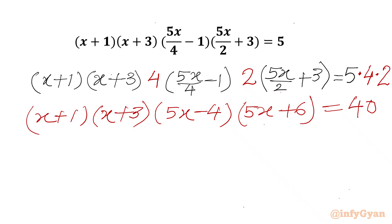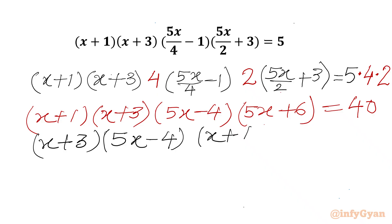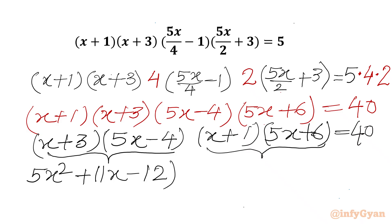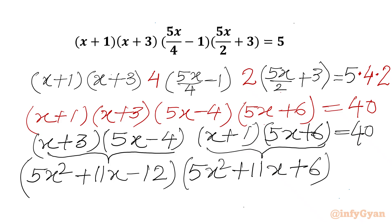Now I will rewrite our equation in this manner. I will consider (x + 3)(5x − 4) and then multiply (x + 1) with the bracket (5x + 6). Expanding (x + 3)(5x − 4): we get 5x² − 4x + 15x − 12, giving 5x² + 11x − 12. Expanding (x + 1)(5x + 6): we get 5x² + 6x + 5x + 6, giving 5x² + 11x + 6.